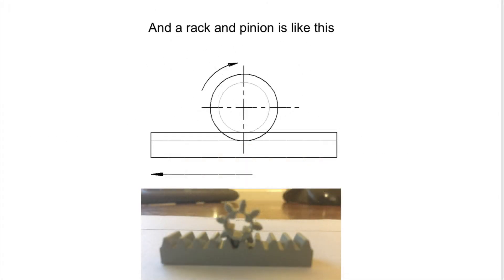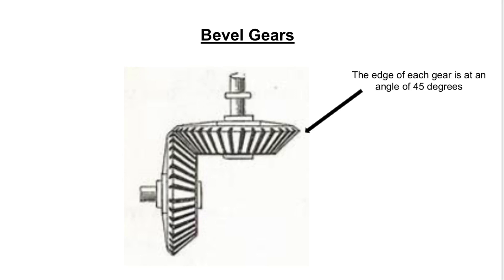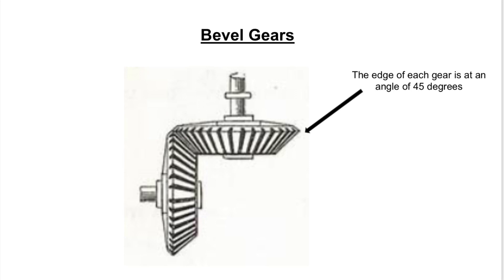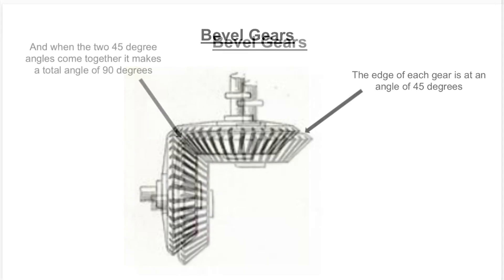Similarly, you might see a rack and pinion mechanism drawn like this. We also need to look at another type of gear called a bevel gear. This is where the teeth are angled at 45 degrees so that when they interlock they change the direction of motion through 90 degrees.